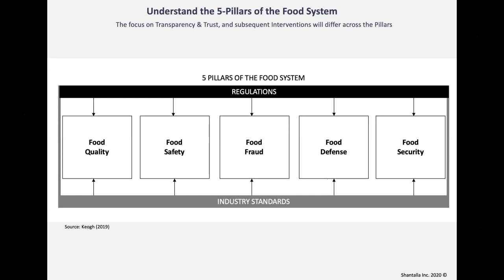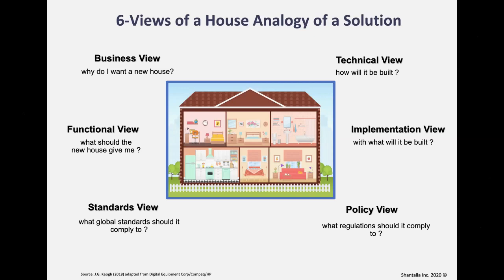Every company and country needs to protect themselves from food defense threats. Food fraud or food authenticity requires very different approaches compared to food quality when you're applying blockchain or AI. Using the five pillars will help you frame the problem you're going after. I've been using this next model for over 25 years.